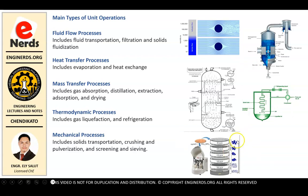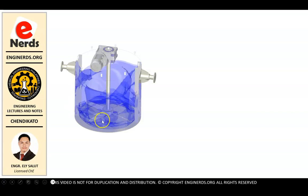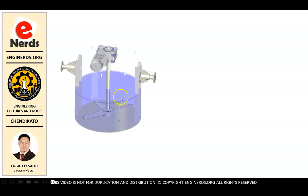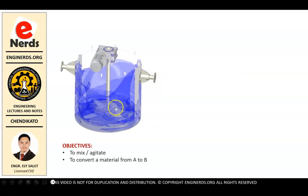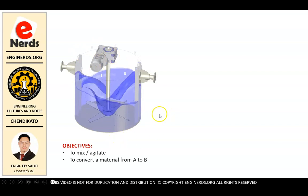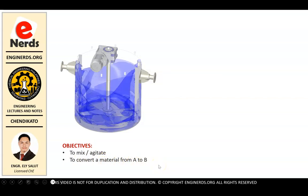Let us have a bit of visualization of unit operation processes. We have here a tank with an agitator which mixes our fluid. What do we call this one? It will depend on our objective. If our objective is to mix or to agitate, we actually call this an agitator. But if we want to convert a material from A to B, so there will be a reaction, this is what we call a reactor.